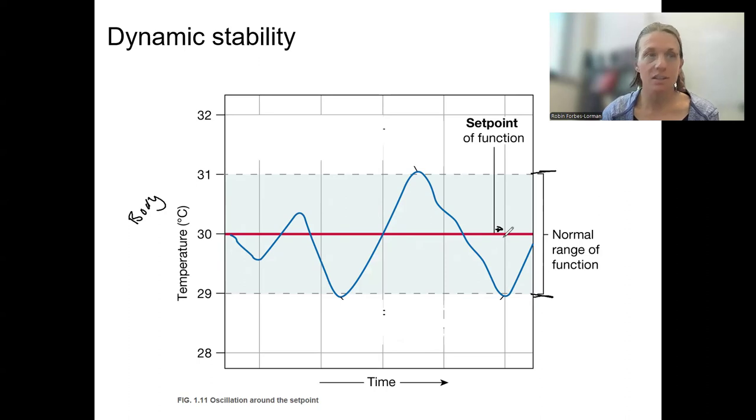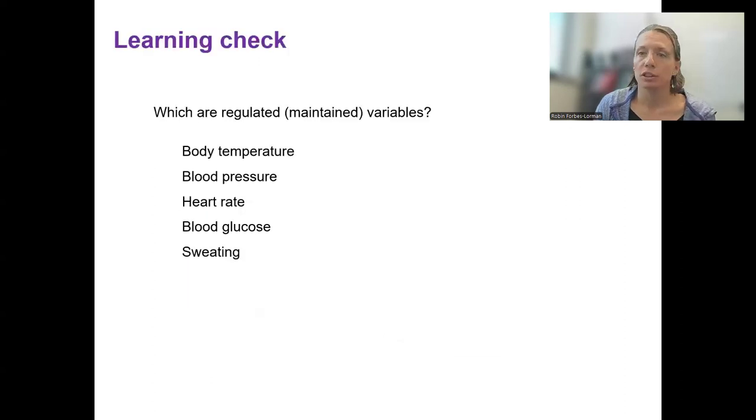If those variables are not maintained, dysfunction, disease, and ultimately death can occur. So quick learning check here: which of these are regulated, which means maintained homeostatically?